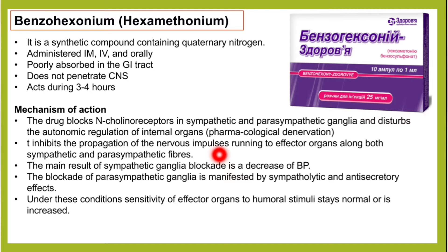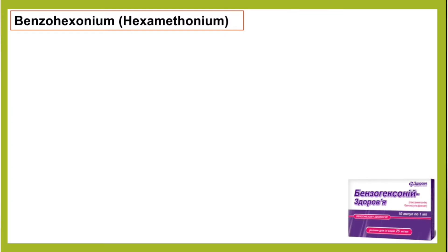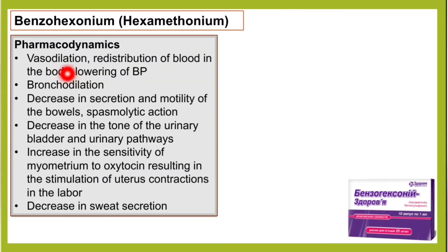The main result of sympathetic ganglia blockade is a decrease in blood pressure. The blockade of parasympathetic ganglia is manifested by sympatholytic and anti-secretory effects. Under these conditions, sensitivity of effector organs to humoral stimuli stays normal or is increased. Benzoyl hexonium causes vasodilation, redistribution of blood in the body, and lowering of blood pressure.